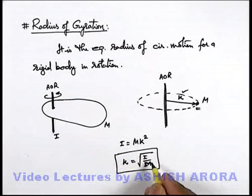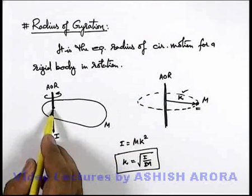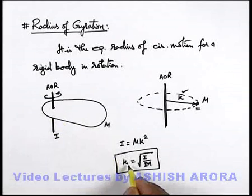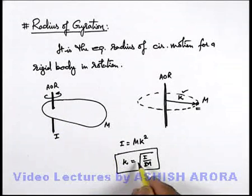Obviously, if we change the axis of rotation for a given body, its radius of gyration changes.